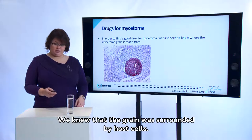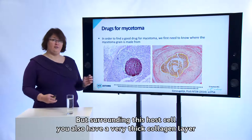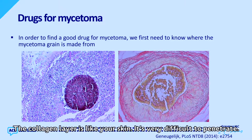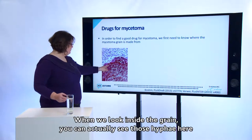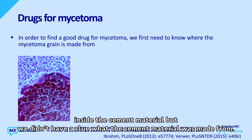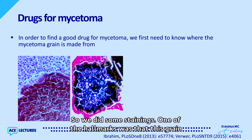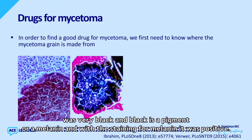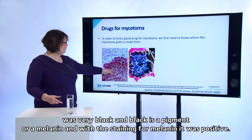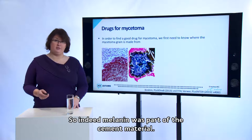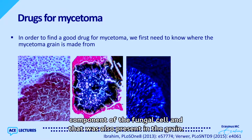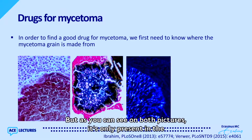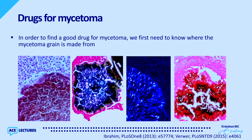The grain is surrounded by host cells, and surrounding those host cells is a very thick collagen layer — similar to skin, and very difficult to penetrate. Inside the grain we can see hyphae within the cement material, but we didn't know what the cement material was made from. Staining showed melanin was part of the cement material. Chitin, a component of the fungal cell wall, was also present in the grain but not in the surrounding tissue. Finally, calcium was also a major part of the fungal grain.